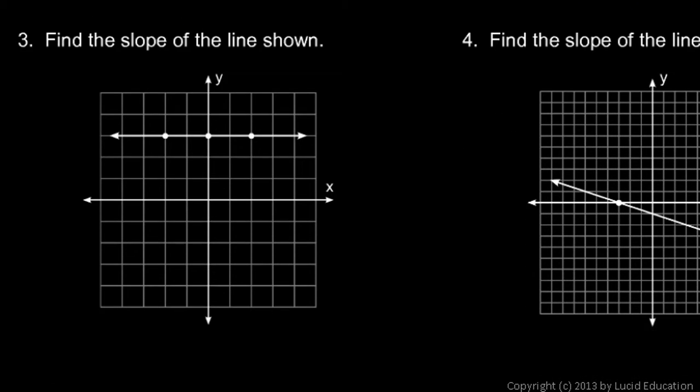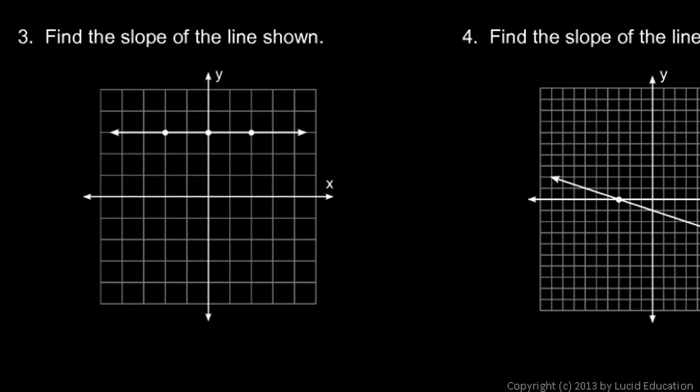Number three, find the slope of the line shown. This line is horizontal, so the slope has to be zero. If you pick any two points on the line, the vertical change will be zero. So the rise is zero, and rise over run, if the rise is zero, it doesn't matter what the run is. Zero over anything is zero.